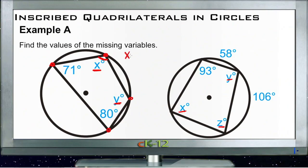Which means that x plus its opposite, or 80, equals 180. So obviously we'll subtract 80 from each side, and we get x equals 100 degrees.